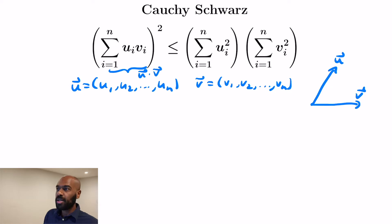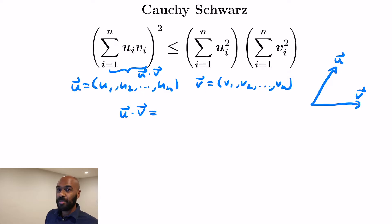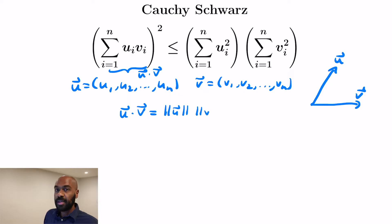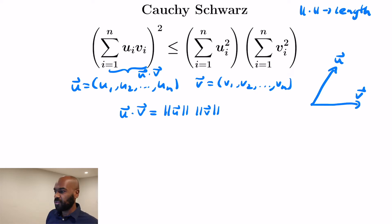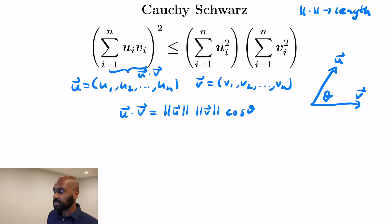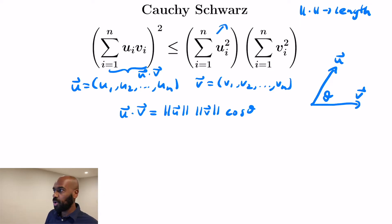The quantity on the left-hand side is the square of the dot product of U and V. There's a key relationship between the dot product of U and V and the lengths of the vectors: U·V equals the length of U — that's what the double bars stand for — times the length of V, times the cosine of the angle between the two vectors.